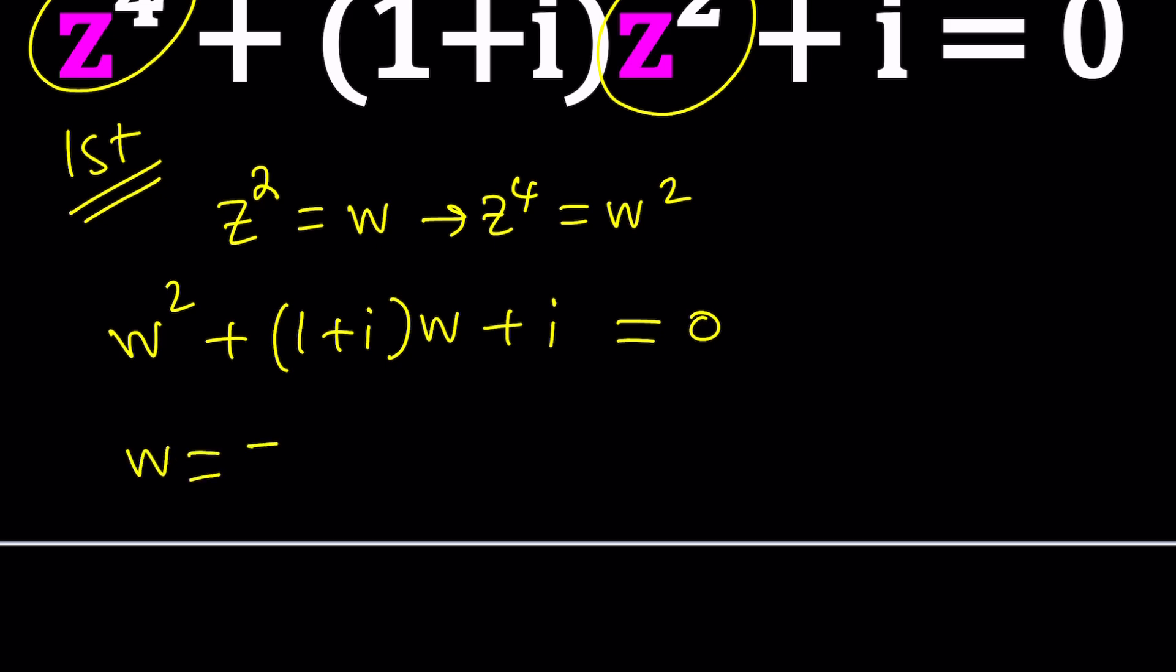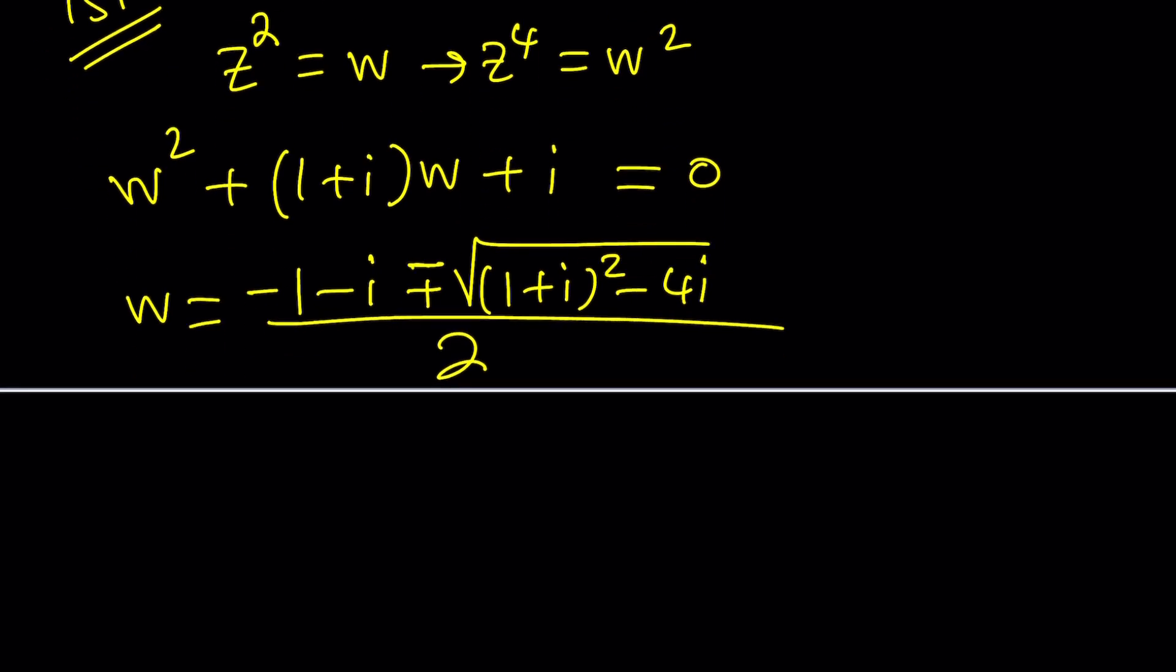Negative b is going to be negative one minus i plus minus the square root of b squared, which is one plus i squared minus 4ac. That would be 4i divided by 2 because a is 1. Great.